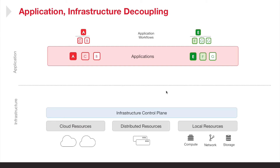In our platform, we establish an infrastructure control plane across a set of resources, which could be cloud resources, distributed resources, or private cloud resources, etc. And then on the other end, you have the application workflows and the application components that you're trying to run on this infrastructure.